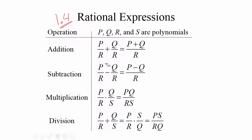So how do you add two rational expressions? Here P, Q, R, and S are polynomials. P divided by R plus Q divided by R equals P plus Q, the whole thing divided by R. This is like taking the common denominator.